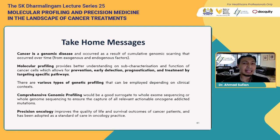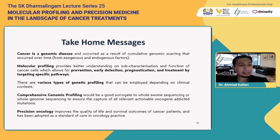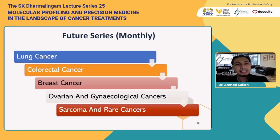The take-home messages: First, cancer is a genomic disease that occurs as a result of cumulative genomic scarring over time. Second, molecular profiling provides better understanding of the sub-characterization and function of cancer cells, allowing for prevention, early detection, prognostication, and treatment by targeting specific pathways. Third, there are various types of genetic profiling decided based on clinical context — comprehensive genomic profiling is a good surrogate for exome or whole genome sequencing to capture all relevant actionable oncogene driver mutations. Last, precision oncology improves quality of life and survival outcomes and has been adopted as standard of care.